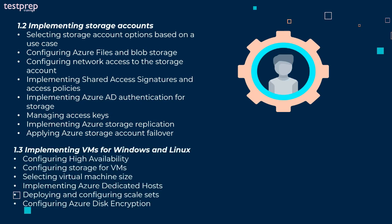Third, implementing VMs for Windows and Linux, divided into six sub-parts: configuring high availability, configuring storage for VMs, selecting virtual machine size, implementing Azure dedicated hosts, deploying and configuring scale sets, and configuring Azure disk encryption.